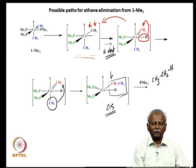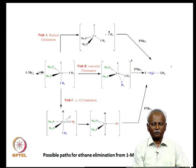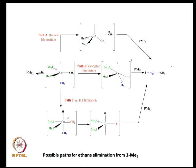They considered three reaction paths and based on their results concluded that path B — concerted elimination — is the most favorable pathway. Alpha elimination to give a series of migratory insertions and alpha abstractions is not happening. The radical elimination was also not happening. It is in fact the formation of a coordinatively unsaturated intermediate from which a concerted elimination of two methyl groups happens, giving the reductive elimination.